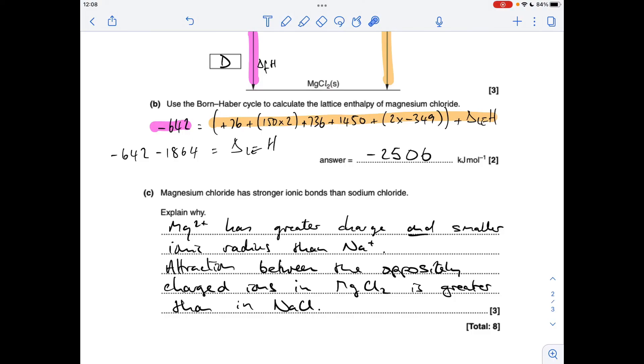So therefore, the attraction between the oppositely charged ions in magnesium chloride is going to be greater than in sodium chloride. And obviously, that's going to give it stronger ionic bonds.